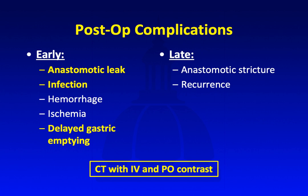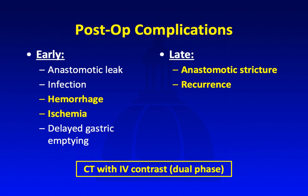PO contrast can also be helpful in infection cases for differentiating bowel from fluid collection. For hemorrhage and ischemia, IV contrast is preferred, and dual-phase imaging can help identify vascular complications. For later surveillance, the complications we worry about are anastomotic stricture and recurrence. At our institution, we perform dedicated dual-phase CT for follow-up surveillance of pancreatic cancer patients.